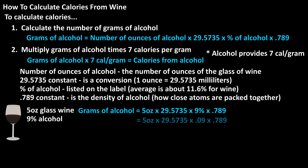We need to convert 9% to a decimal by dropping the percent sign and moving the decimal two places to the left to get 0.09, times 0.789. This calculates to 10.5 grams of alcohol, rounded off.